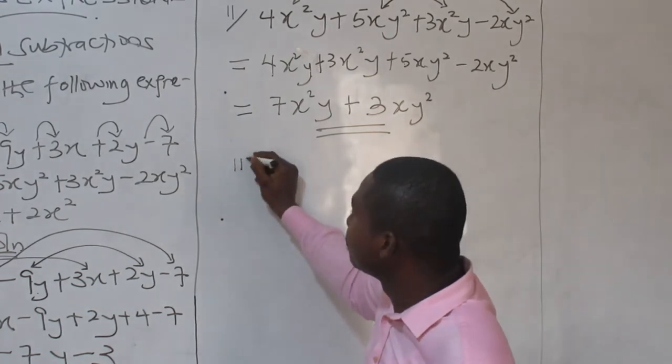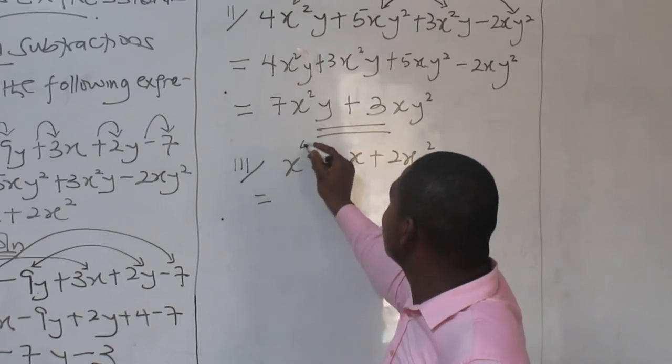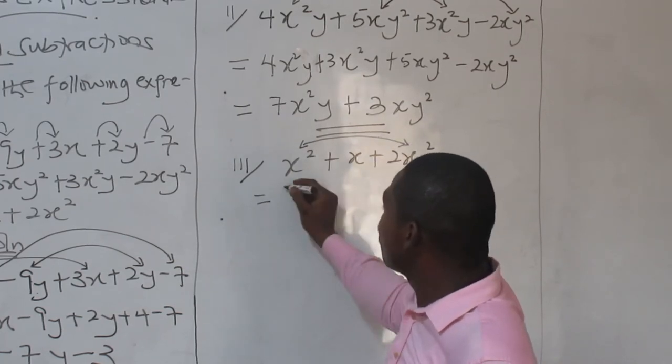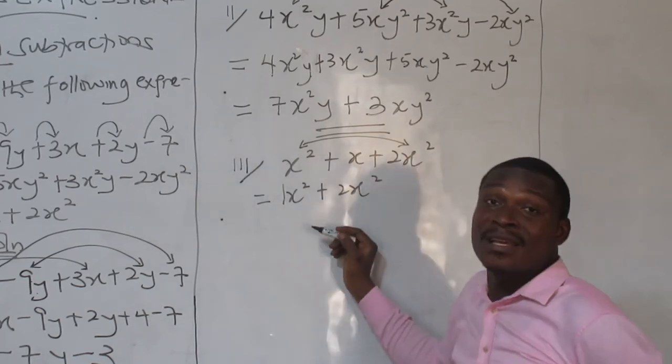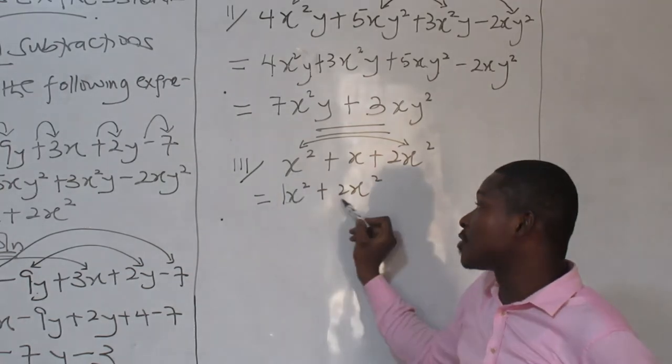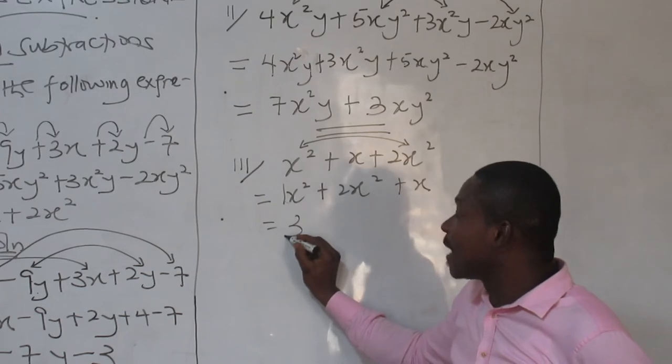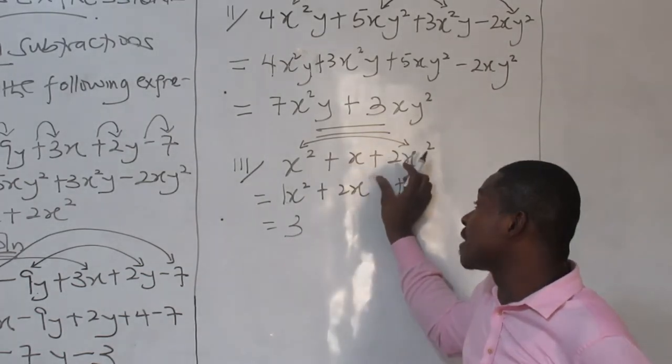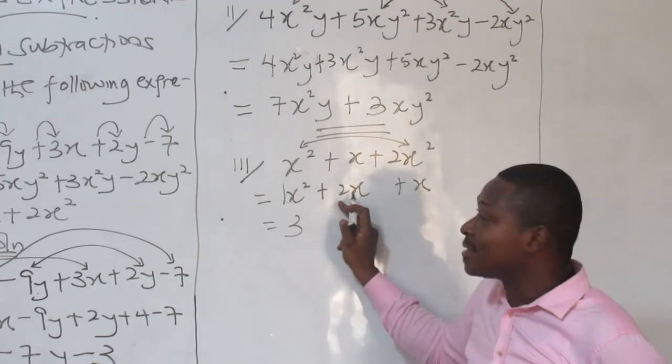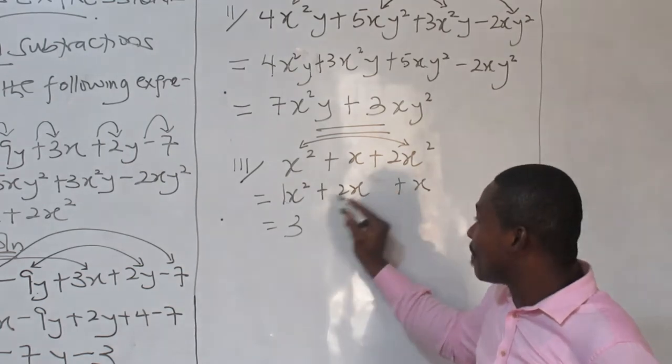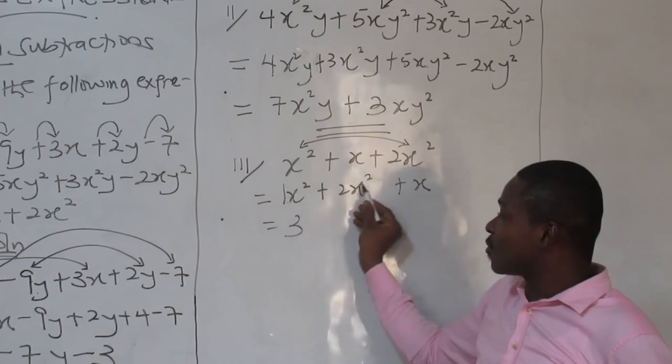Now, the last one. x squared plus x plus 2x squared. This and this are compatible. So I have 1x squared plus 2x squared. The missing or hidden coefficient here is 1. Plus this x. So this plus this is 3. And can I add them? Yes. But if this 2 wasn't here, I can't add this. Remember, before you add, the variables should have the same exponents. But I can multiply this. But I can't add this. I can only add this.